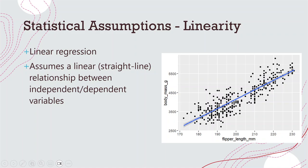The second assumption is linearity. This is relevant to our correlation and regression statistical tests where we have two continuous variables — one continuous predictor and a continuous response. The assumption is that there is a linear or straight-line relationship between the independent and dependent variables, as opposed to a quadratic, logistic, or other curved shape.